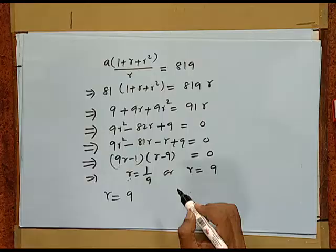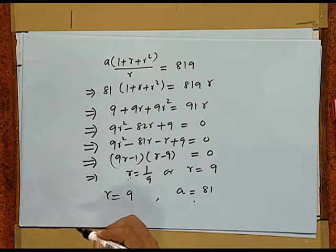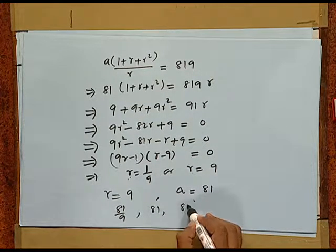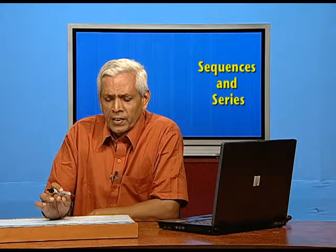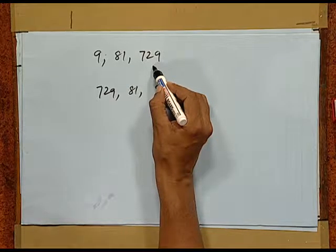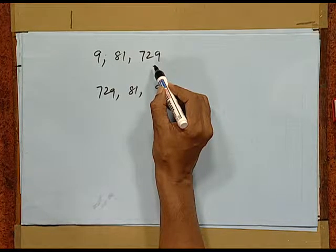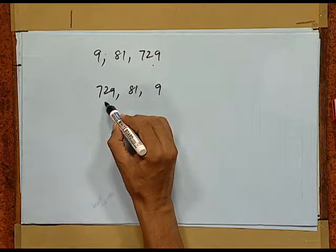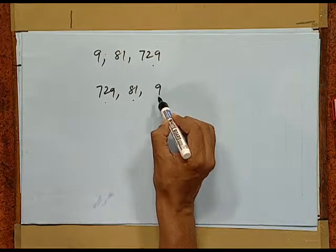First, we take r = 9. We already know a = 81. Our first term was a/r = 81/9 = 9, then 81, then 81 × 9 = 729. So for r = 9, our three terms are 9, 81, and 729. But we also had r = 1/9, and with that value the sequence becomes 729, 81, and 9. Both are valid answers, and we must write both answers in the examination to get full marks.